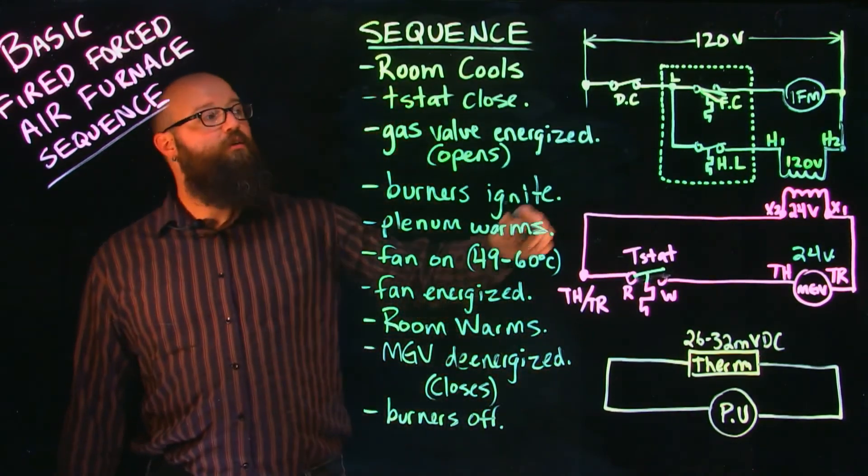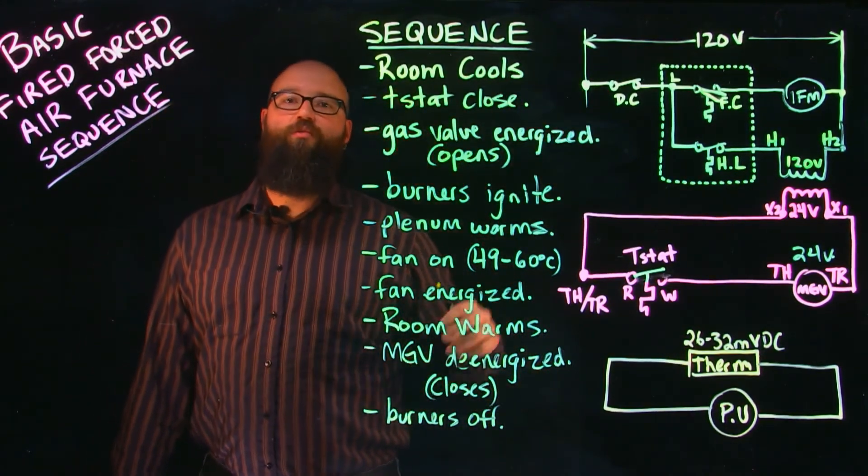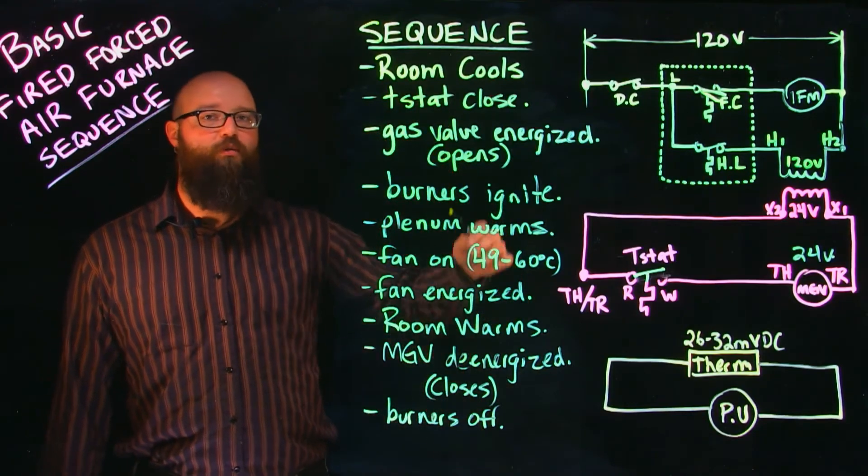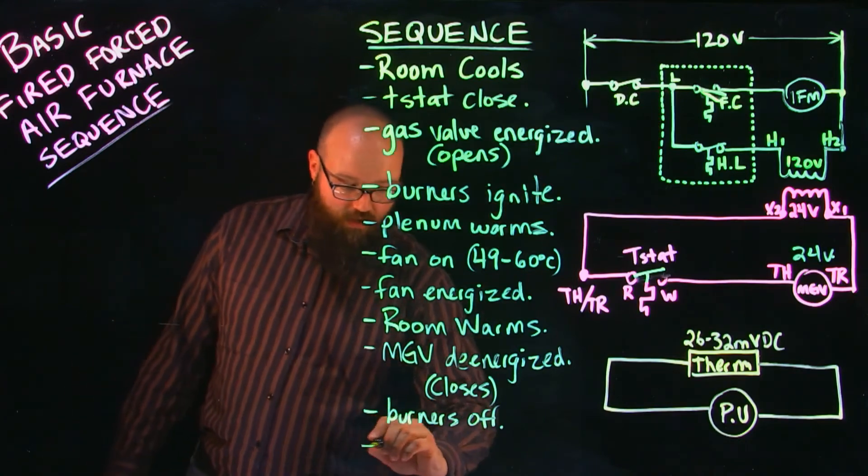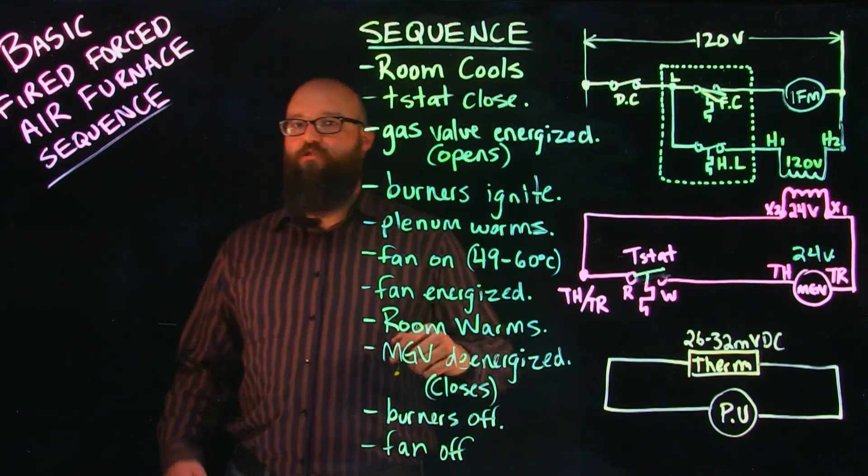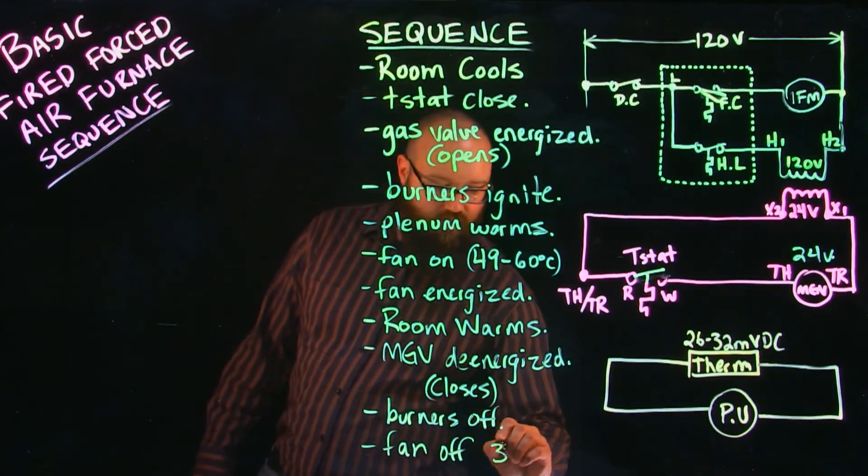Our fan is still running and that fan is going to continue to run until that plenum starts to cool. That plenum is going to cool until we reach a preset temperature on our fan control. Our fan off will be somewhere usually around 32 to 38 degrees Celsius.